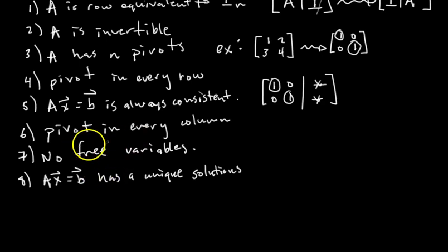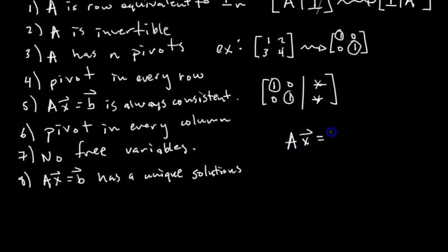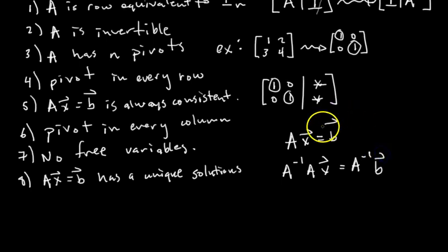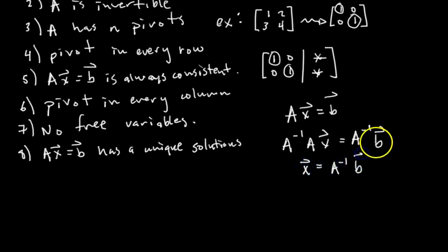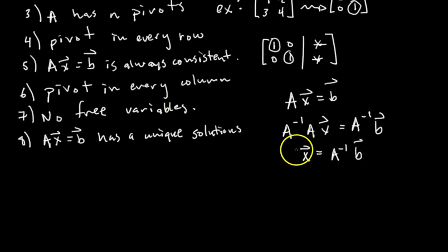Another way to think about the unique solution: if A is invertible and you have Ax = b, you can left multiply both sides by A inverse. A inverse times A equals the identity matrix, and the identity times x is just x, so this simplifies to x = A inverse times b. That's the unique solution to Ax = b — x equals A inverse b. So no free variables gives a unique solution, and equivalently, left multiplying by A inverse gives the same unique solution.